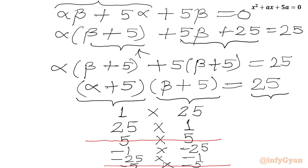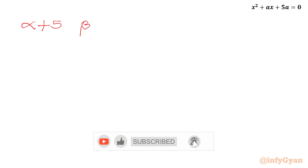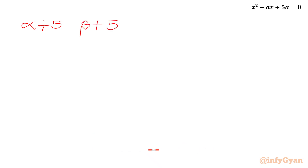So only 4 cases are acceptable: (1, 25), (25, 1), (minus 1, minus 25), and (minus 25, minus 1). I will create a table with columns for alpha plus 5, beta plus 5, then we will calculate alpha, then beta, and since we know A in terms of alpha and beta, we will be able to find the real values of A.